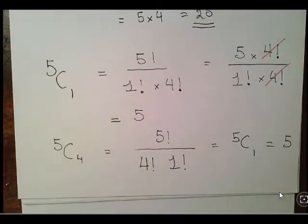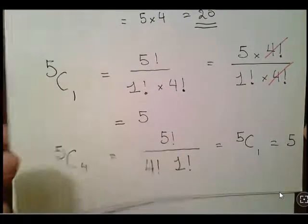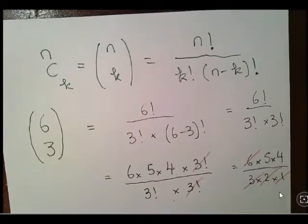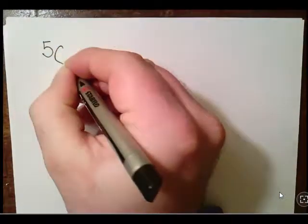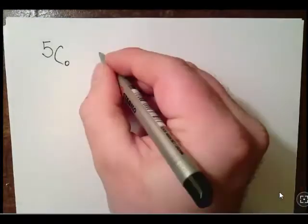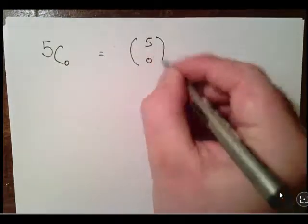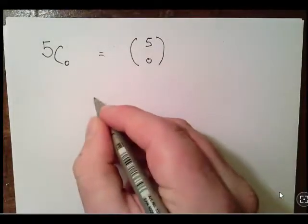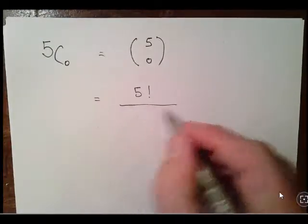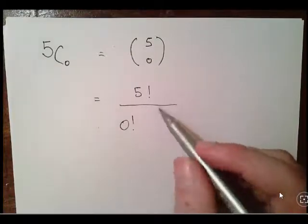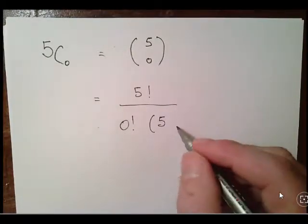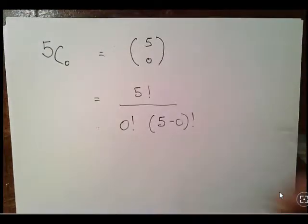Now, just as a remark, there's an interesting result there, but I'm going to leave it there, but that's not a coincidence. I'll come back to that in a future video. 5 choose 0: that is equal to 5 factorial over 0 factorial, 5 minus 0 is simply 5 factorial.